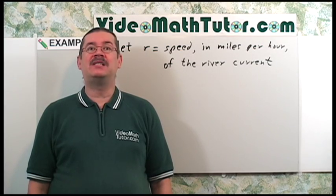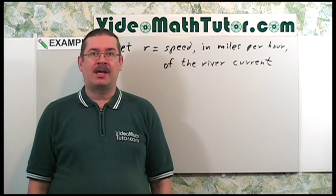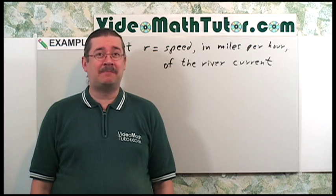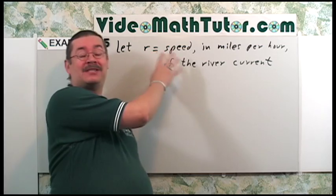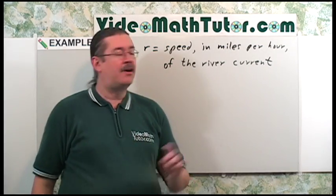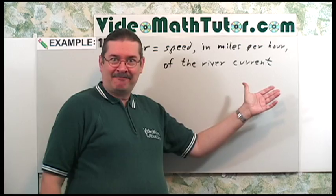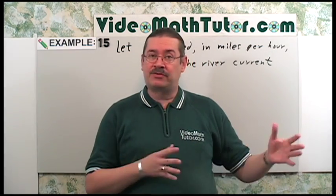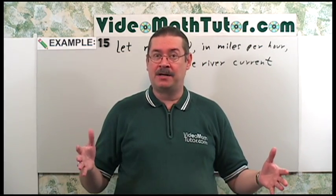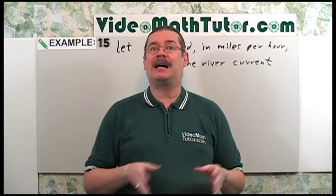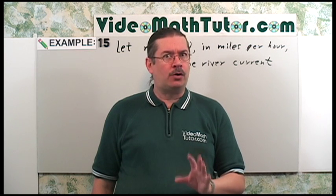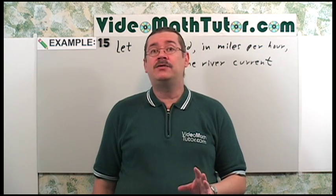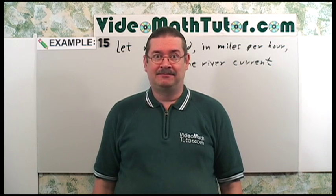Now, I want to define a variable. If I read the problem carefully, it asks me to find the speed of the river current. So I'm going to let r equal the speed in miles per hour of the river current. Now, in this word problem, we have to concern ourselves with speed, times of travel, distances of travel. So this is a rate, time, distance type of problem. The strategy I suggested earlier to solve this type of problem is using a table of information. So let's do that next.